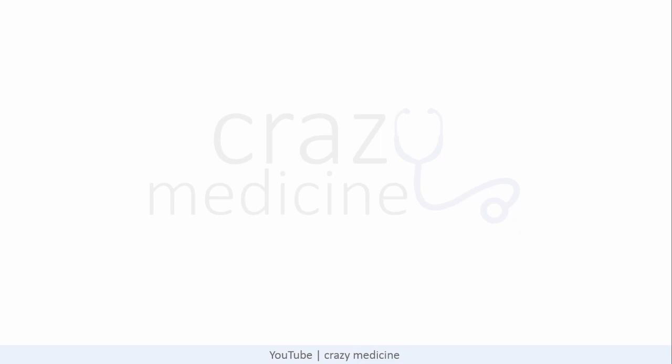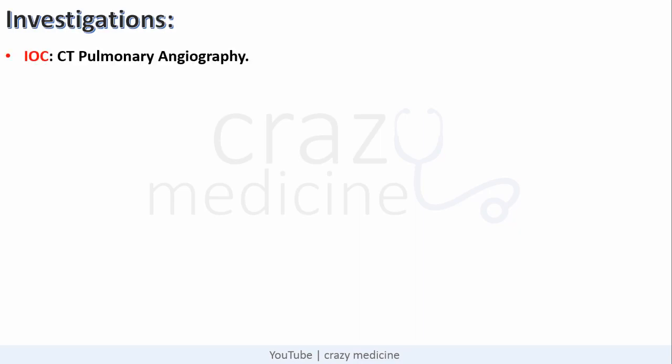Coming to investigations: the investigation of choice is CT pulmonary angiography, and the gold standard investigation is invasive pulmonary arteriography. Regarding VP scan, it has a very limited role and can be used in pregnancy or in patients with contrast intolerance.